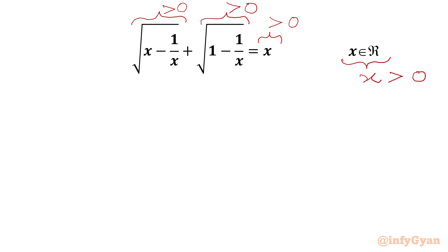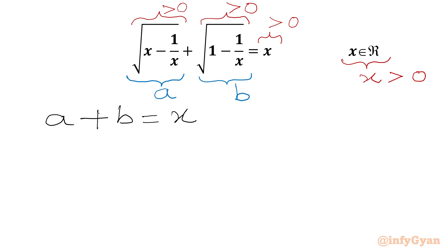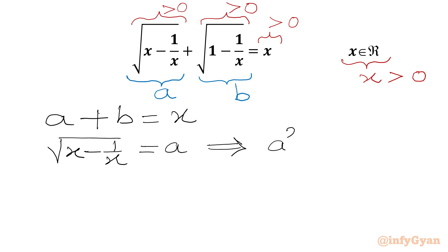Now I will use the method of substitutions. I will consider the first square root equal to a and the second square root of the LHS equal to b. From these substitutions we can write our first equation: a plus b equal to x. Then, square root of (x minus 1 over x) equals a, and squaring both sides gives a squared equal to x minus 1 over x. Note that a should be positive and b should be positive.